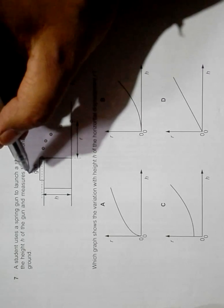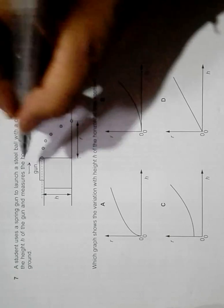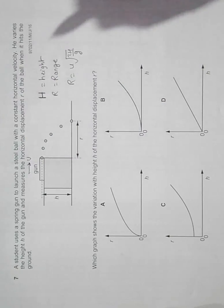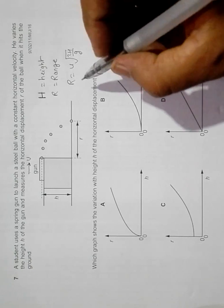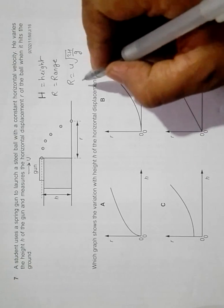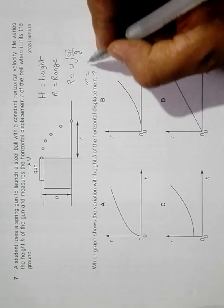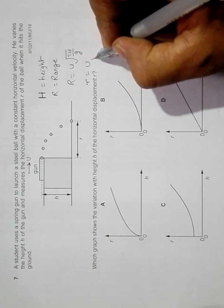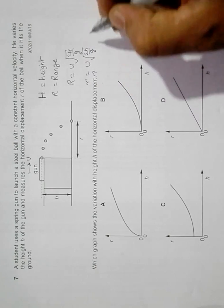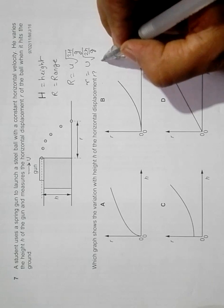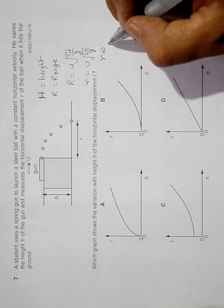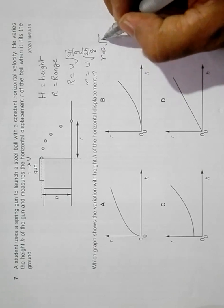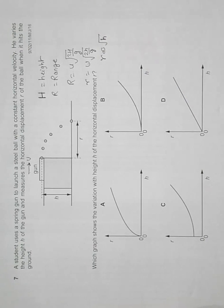u is the velocity of firing, h is the height, and g is the acceleration due to gravity. In this case, r equals u root 2h by g, which means that r is proportional to root h if we keep u and g constant. So r is proportional to root of h.